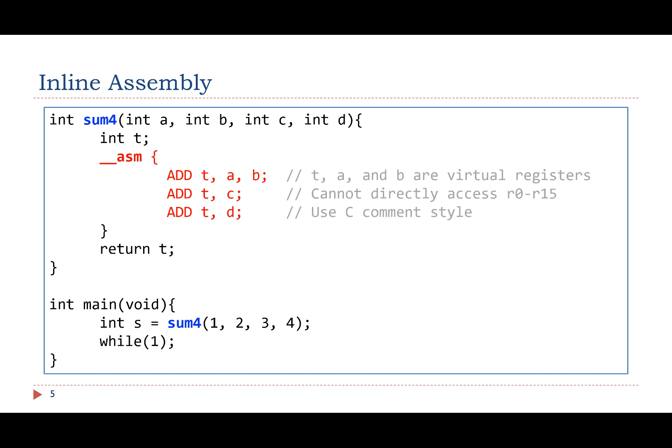The assembly code should treat each C variable as a register. These C variables are called virtual registers. They can be used in assembly instructions. The comments within the assembly block must be in C style rather than assembly style.